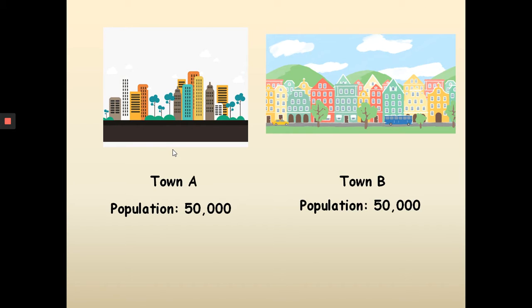You can assume that the populations are equal — that's what equal means, that they have the same quantity.